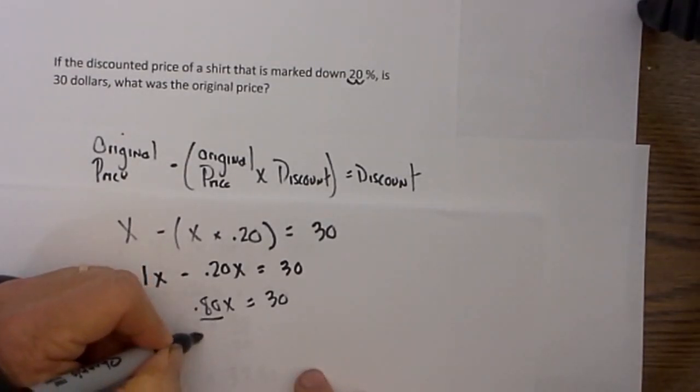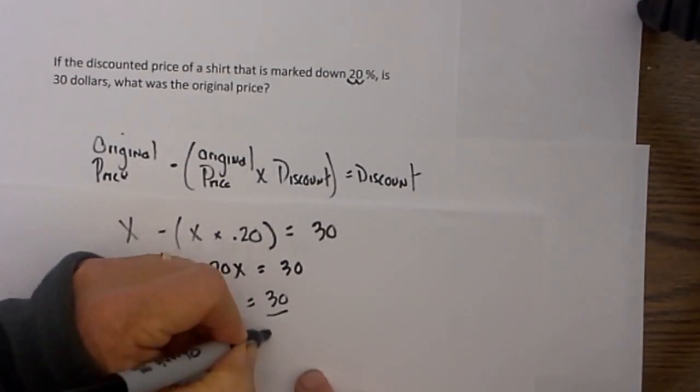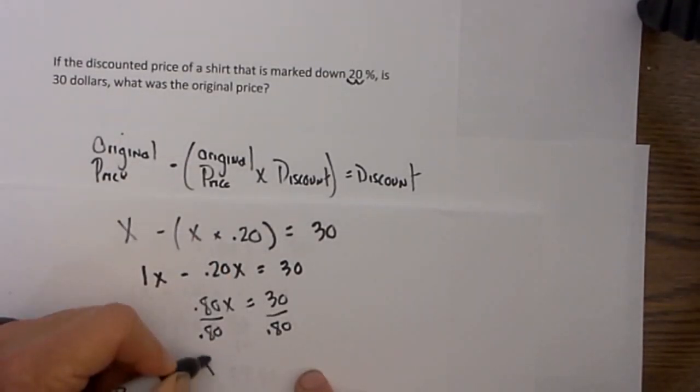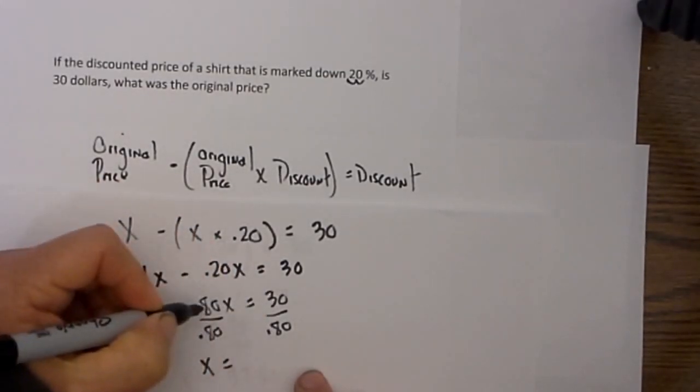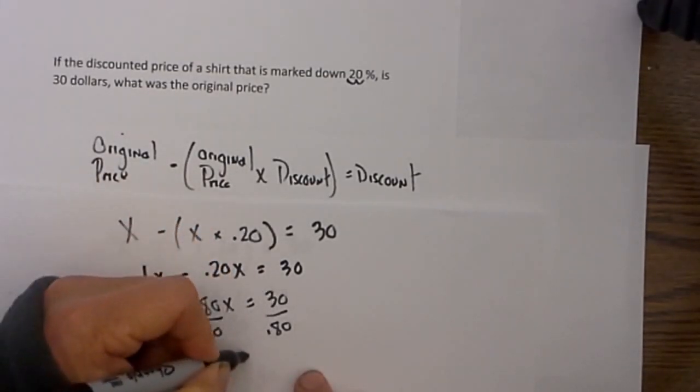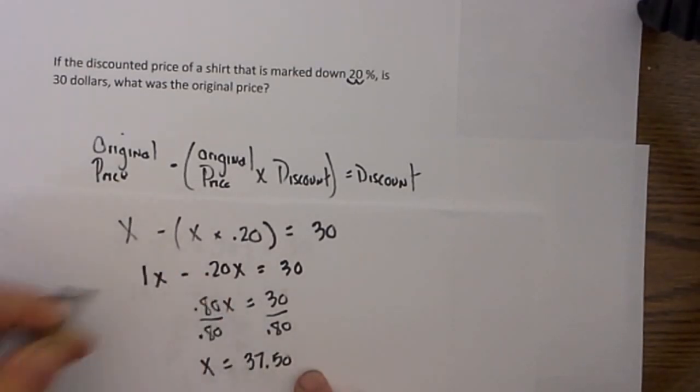I then divide each side by .8. So x will equal 30 divided by .8, which is $37.50.